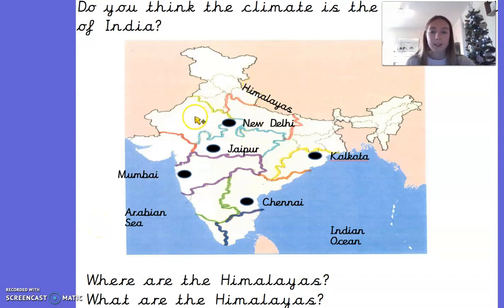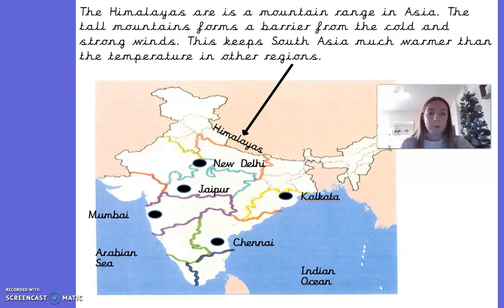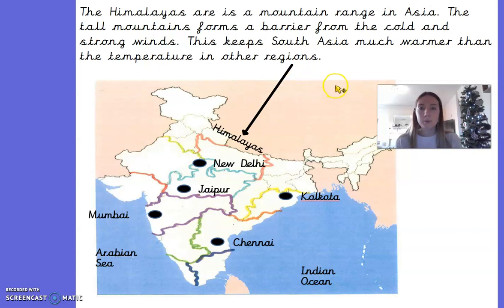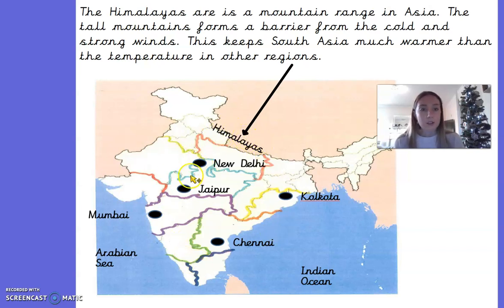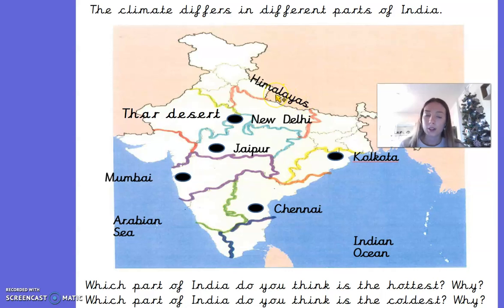We're going to look at some different areas in India today and have a look at what their climate is like. The first part is the Himalayas, which are at the north of the country. The Himalayas are a mountain range in Asia — they aren't just in India; we've also got China. The tall mountains form a barrier from the cold and strong winds that come from north Asia, which keeps south Asia much warmer. So the Himalayas form that barrier so the cold winds can't reach the rest of the country. In winter it does get very, very cold there.